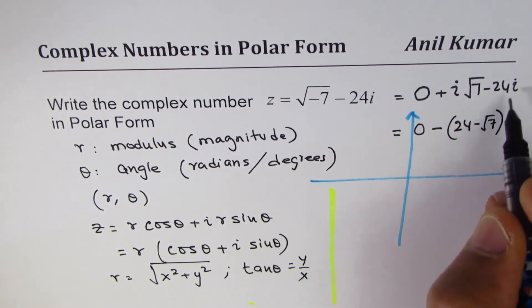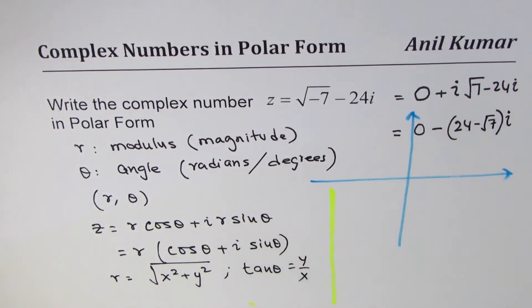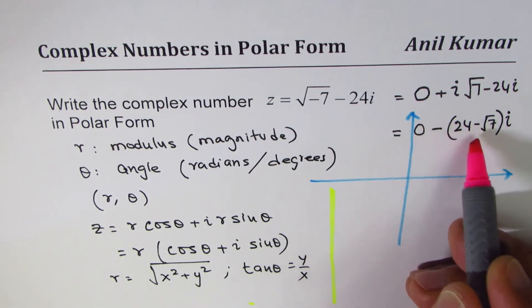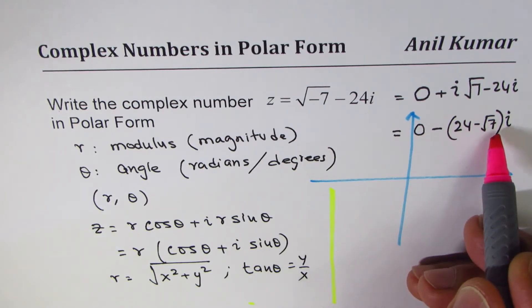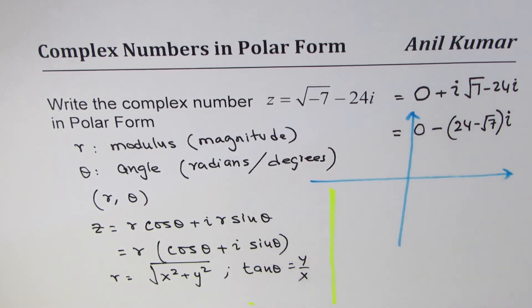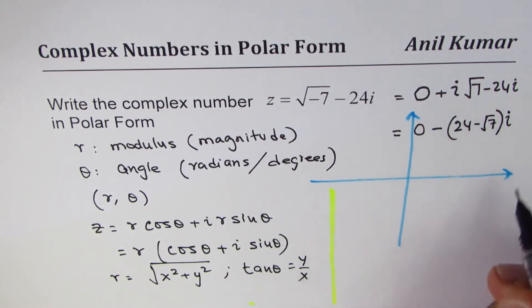What we see here is that this complex number has real part as 0, so both parts are actually imaginary parts. The equation should be seen as 0 minus (24 minus square root 7)i. That's what it is.